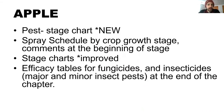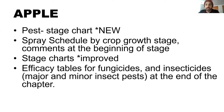In the Apple chapter, we have a new pest stage chart at the very beginning of the chapter for our insect pests. We've updated the spray schedule by crop growth stage and updated all the tables and charts within those stages, as well as created new fixed tables for fungicides and insecticides at the end of the chapter. And I'm going to walk you through and show you some of those updates now.